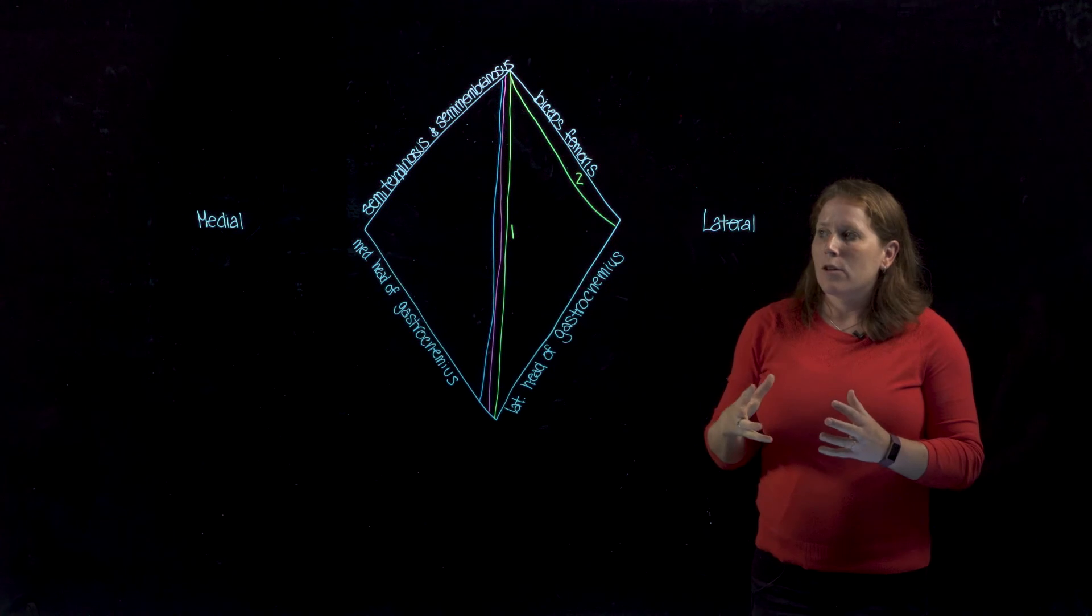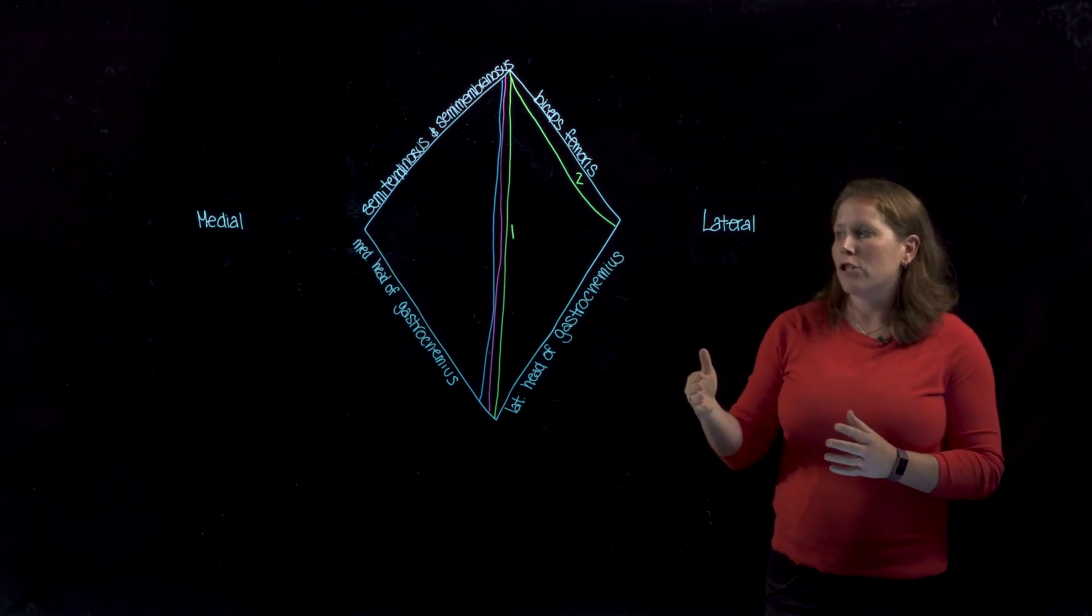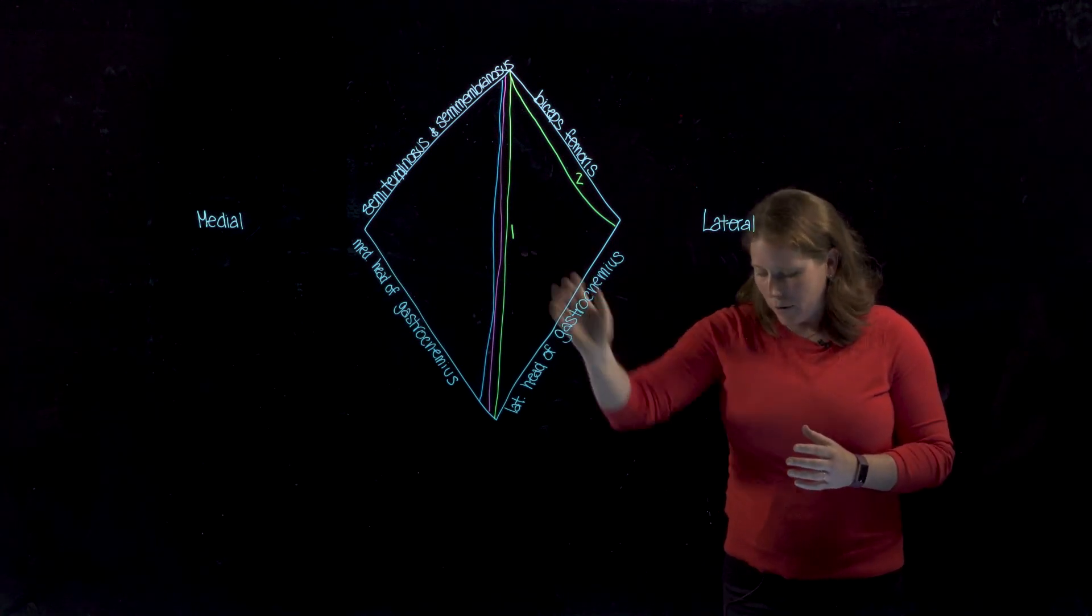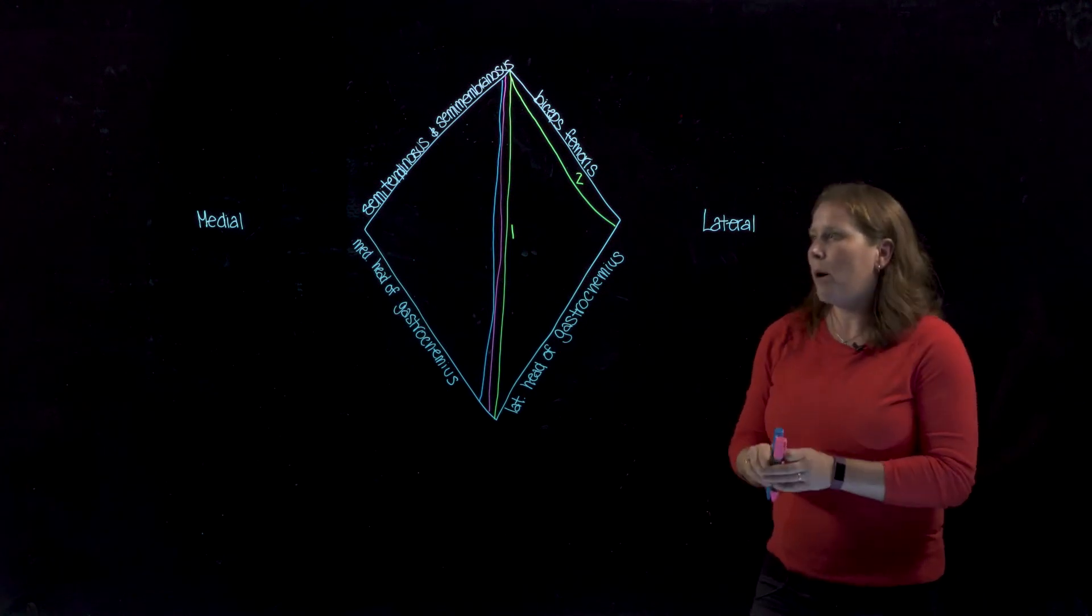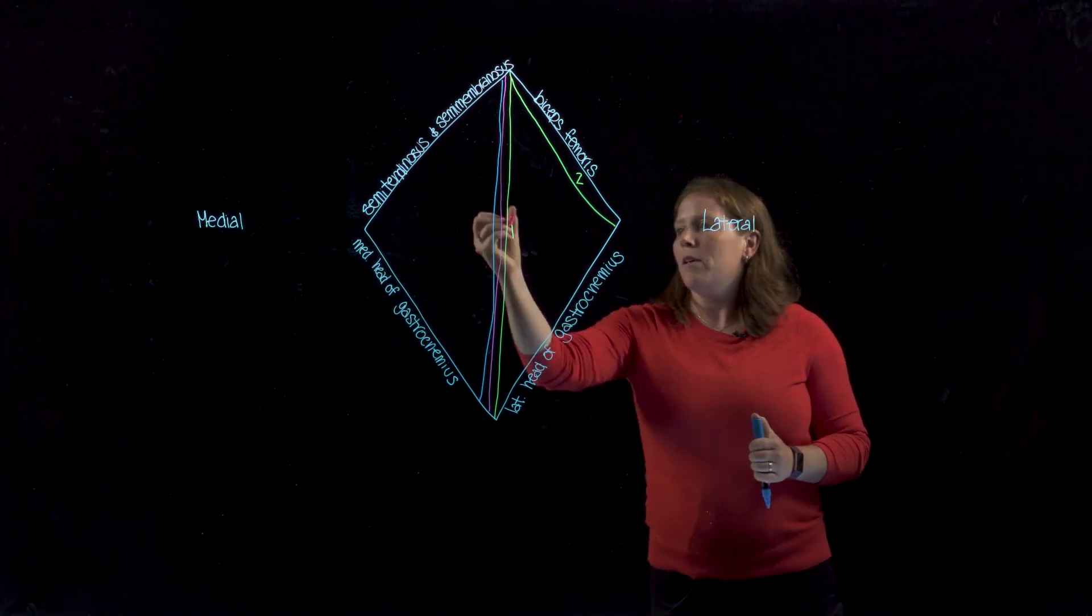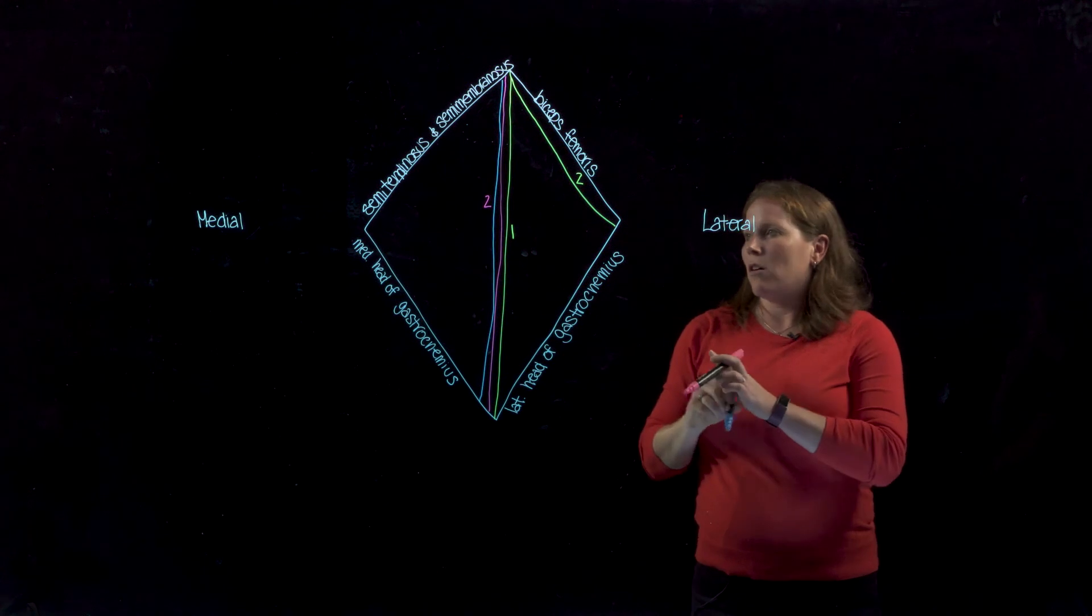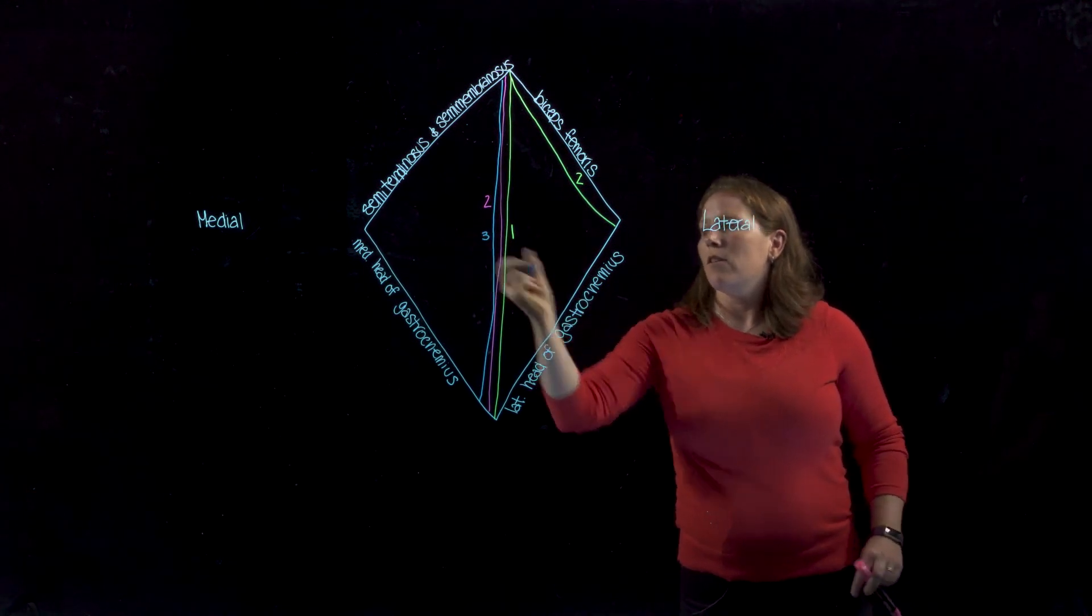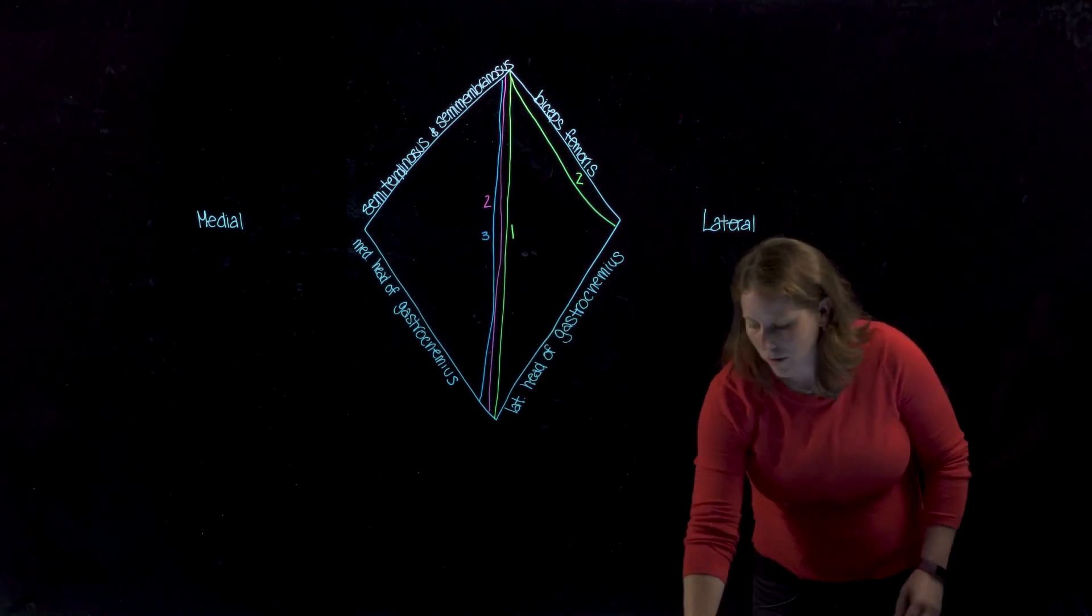And it's not critical that you would know the relationship between tibial nerve and the popliteal artery and vein. You'll be able to distinguish those just based on characteristics of nerve, artery, and vein that you'll be learning in the lab.